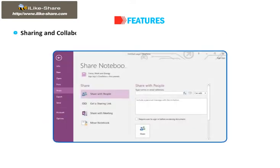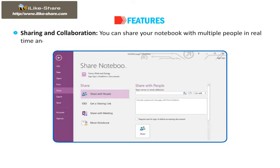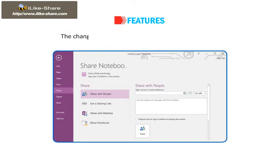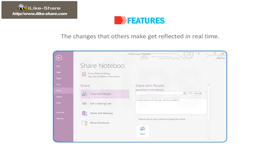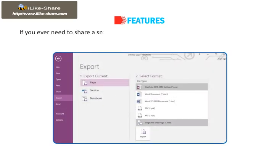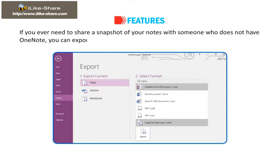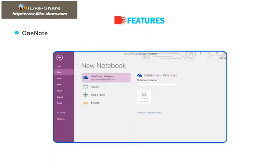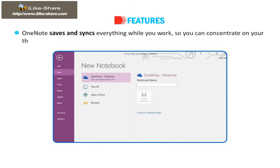Sharing and Collaboration. You can share your notebook with multiple people in real-time and can collaborate on it at the same time. The changes that others make get reflected in real-time. If you ever need to share a snapshot of your notes with someone who does not have OneNote, you can export your files in a variety of file formats. OneNote saves and syncs everything while you work, so you can concentrate on your thoughts and ideas instead of your file.